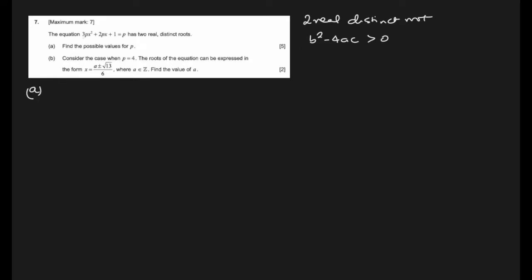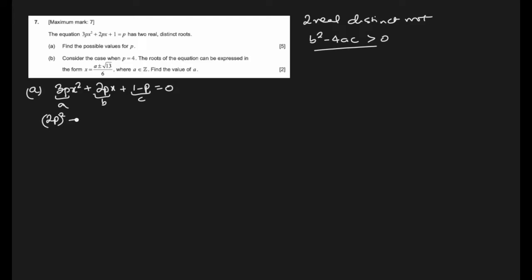First, collect everything to the left side: 3px² is alone, 2px is also alone as the coefficient of x, but 1 and -p are both constants, so we collect them. This gives us a = 3p, b = 2p, and c = 1 - p. We must have b² - 4ac > 0, so (2p)² - 4(3p)(1 - p) > 0.